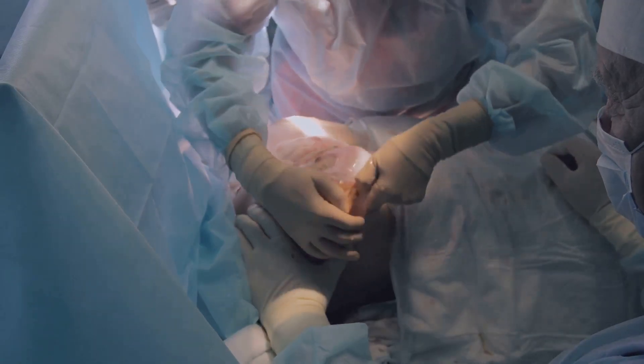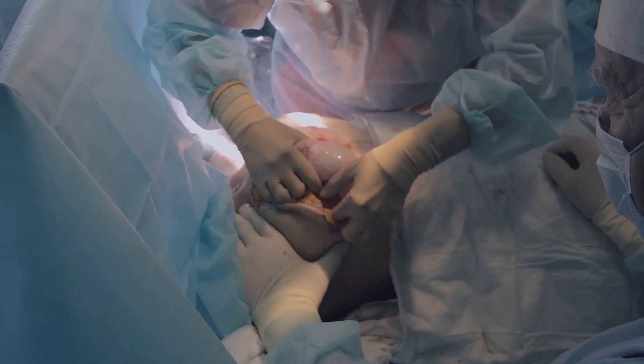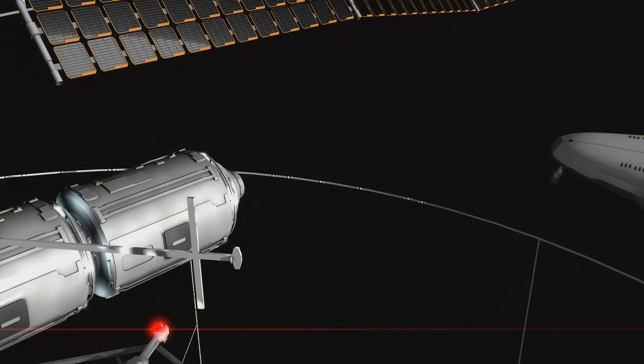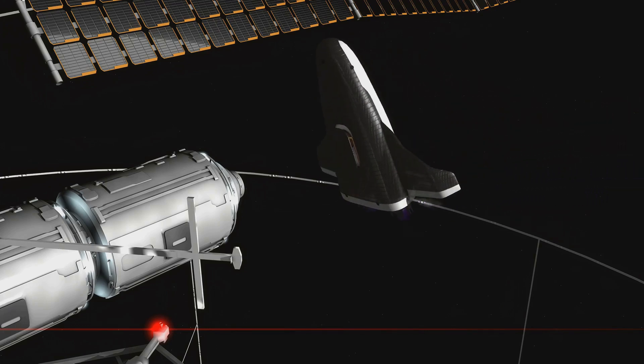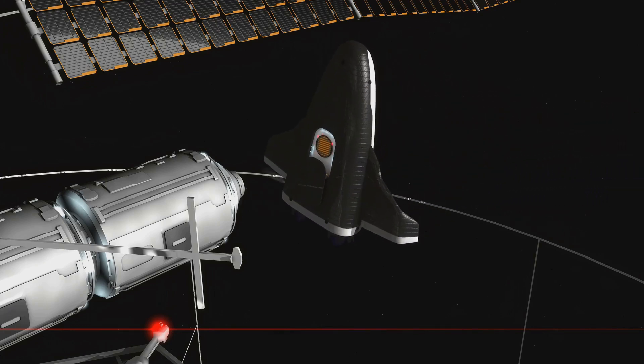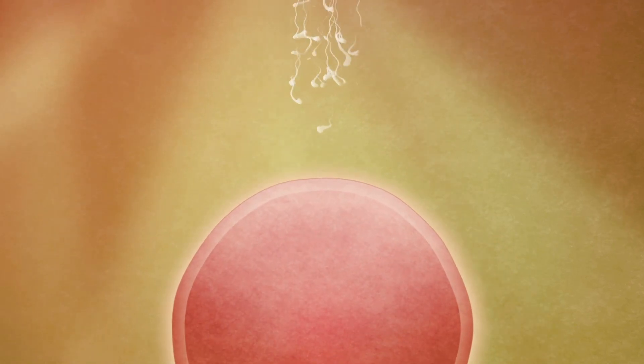We're talking about implantation, the most crucial and dangerous phase of this whole journey. Imagine this: the blastocyst, this tiny sphere of cells, has to somehow attach itself to the lining of the uterus, kind of like a spaceship docking at a space station, except a million times more complicated.